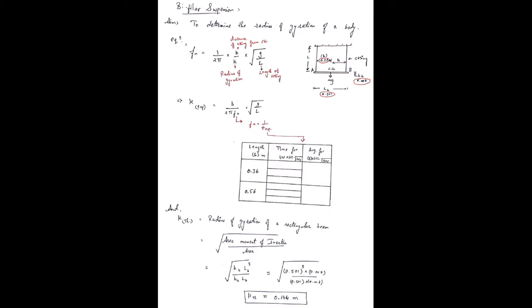Now if we can measure the time period of this system, we can determine the radius of gyration from this equation. So we will perform the experiment and measure the time period of the system. We can determine the value of radius of gyration theoretically by equation root of area moment of inertia by area.